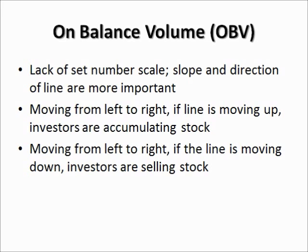Moving from left to right, if the line is sloping upwards, that means investors are accumulating stock — in other words, there is more buying power. If it's moving from left to right and the line is moving downwards, that means investors are selling the stock. That should give you a good idea of what it looks like and how it translates into price.